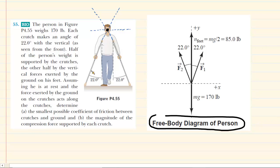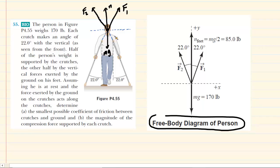We have the first crutch located on the lower left, pushing up and to the right on the man to support him — we'll call that force F1. Similarly, the other crutch is pushing up and to the left on the man's mass — we'll call that F2. We have the ground pushing up on the man, which we'll call the normal force. And then we have the gravitational force acting downward, which we can call mg.